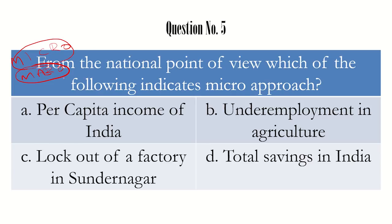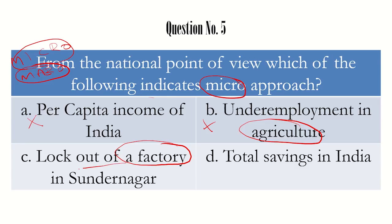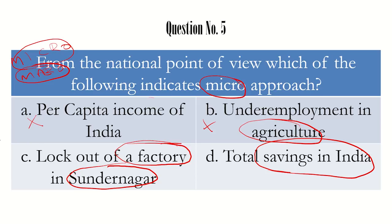This question asks which option indicates the micro approach from a national point of view. Per capita income is at the macro level, considering national income and population, so that is not the answer. Underemployment in agriculture considers the entire agriculture sector of the country, which is macro in nature. Lockout of a factory in Sundarnagar refers to one particular factory in one city, so this might be the answer. Total savings in India is again at the national level. Therefore, the right choice is option C — lockout of a factory in Sundarnagar — which is micro in nature.